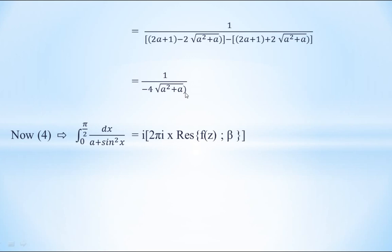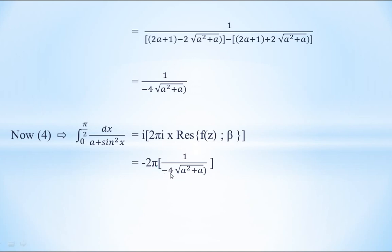Substituting into equation 4 using Cauchy's residue theorem: the integral from 0 to π/2 of dx/(a + sin²x) equals i · 2πi · [1/(−4√(a²+a))] = −2π · [1/(−4√(a²+a))]. The negatives cancel, giving the final answer: π / [2√(a²+a)].